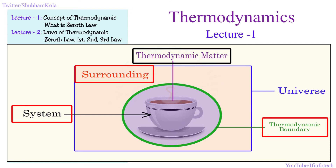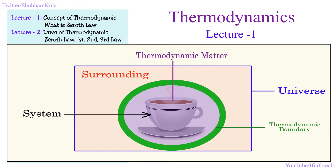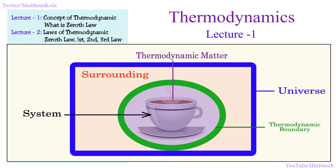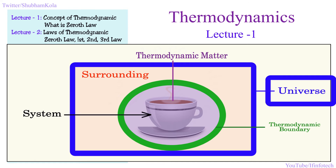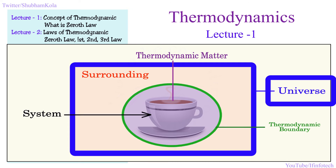So system, surrounding, and thermodynamic boundary — these three things are related. Inside the system there is thermodynamic matter. If we join system and surrounding together, that becomes the universe. So system plus surrounding is called the universe.